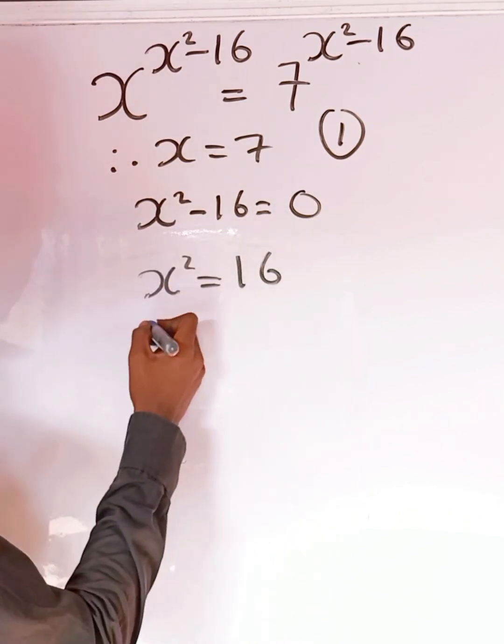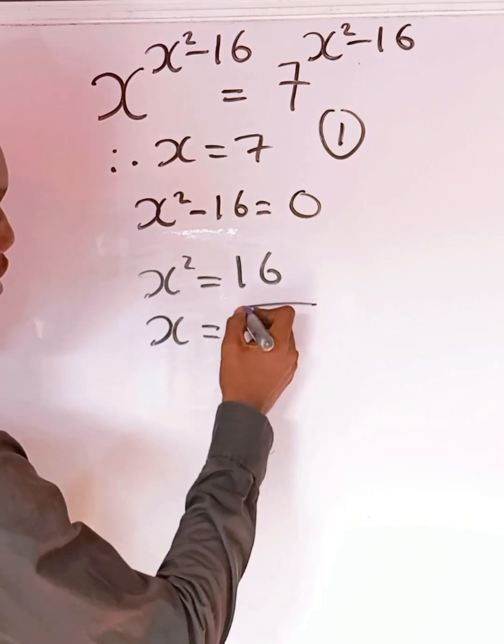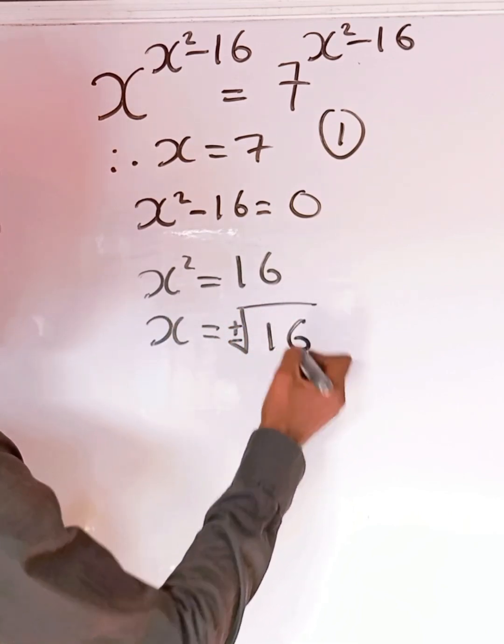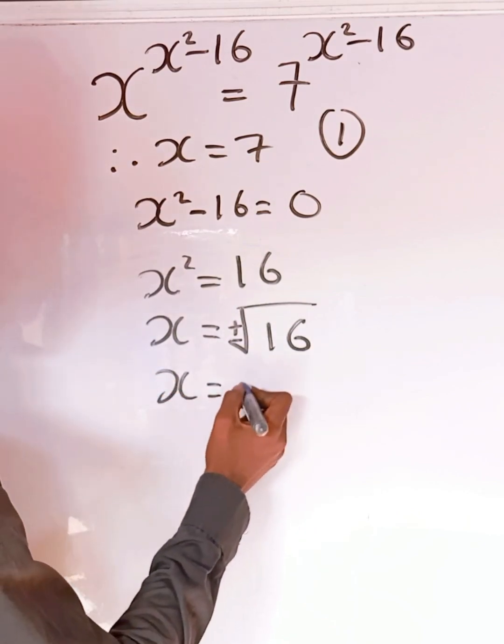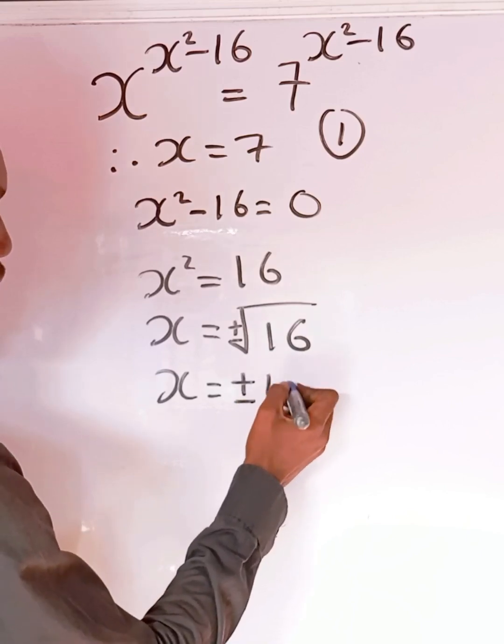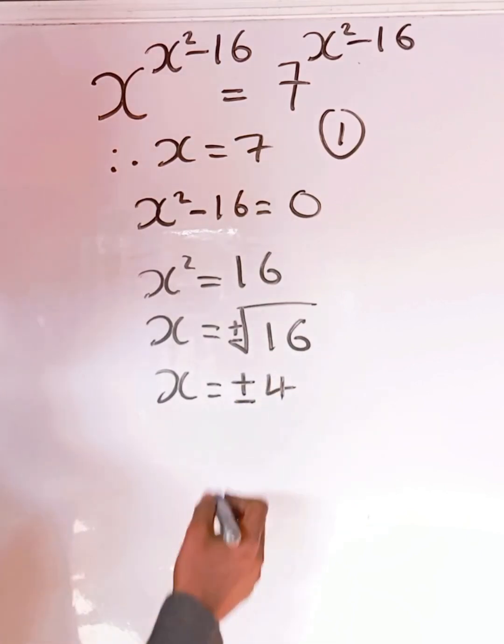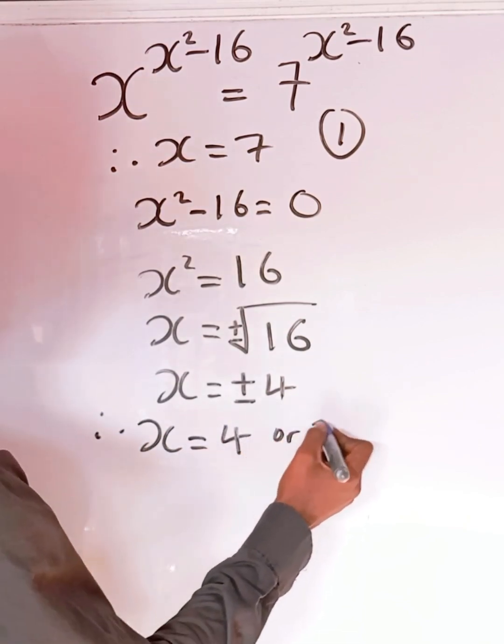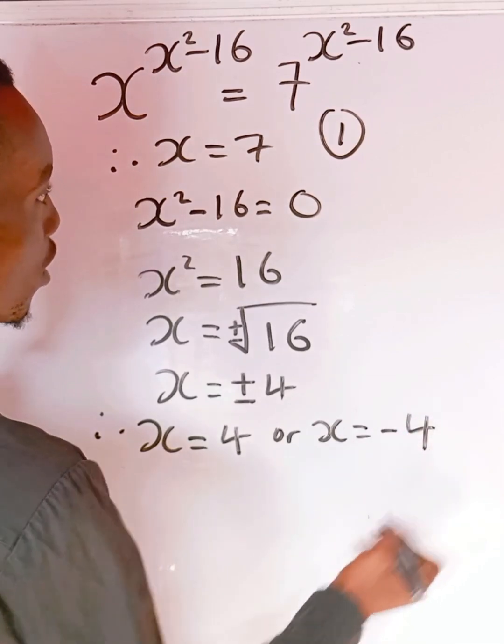So I want to take the square root. We're going to have x equals plus or minus the square root of 16. So that means x is equal to plus or minus 4. Because that means the other two solutions are x equals 4 or x equals negative 4.